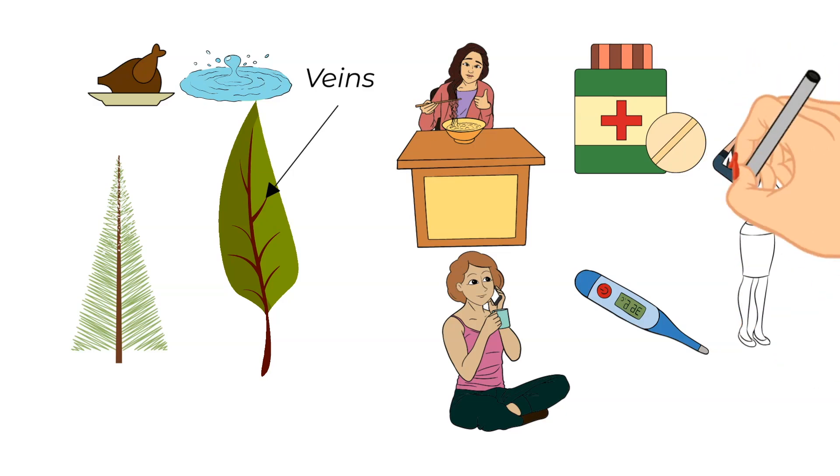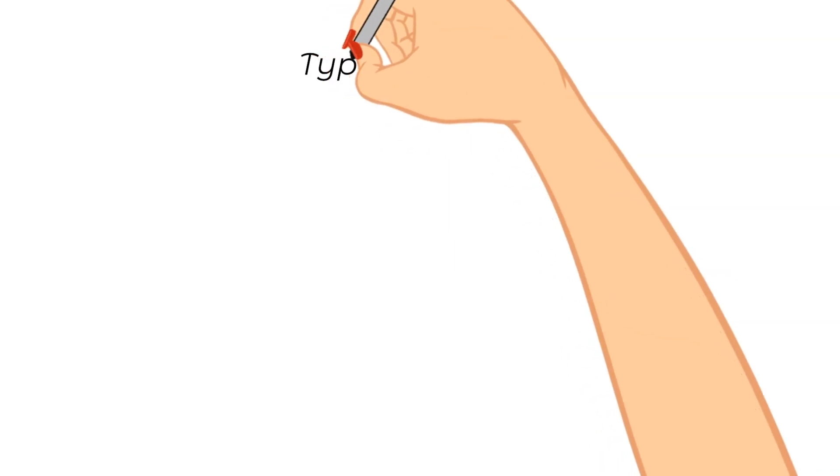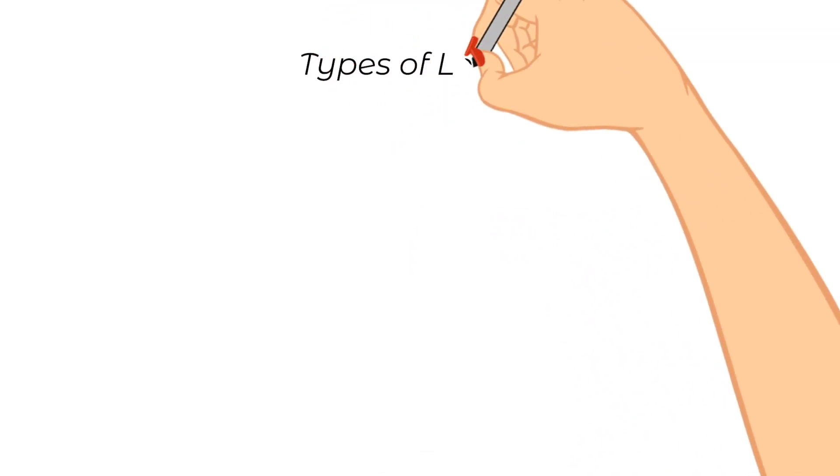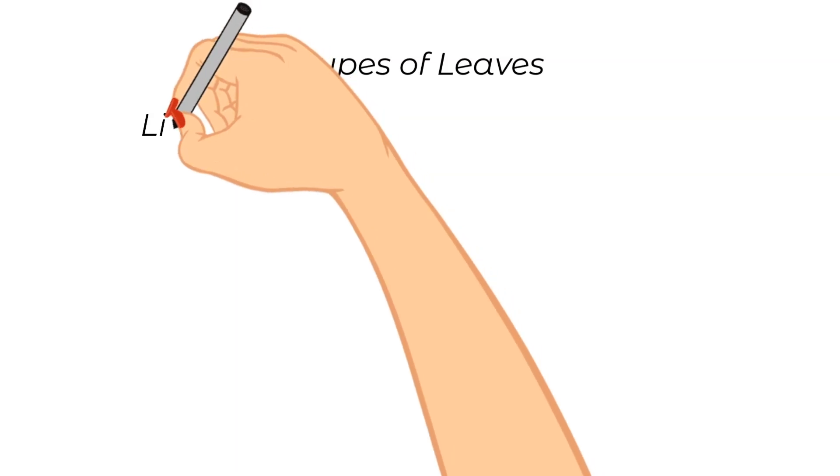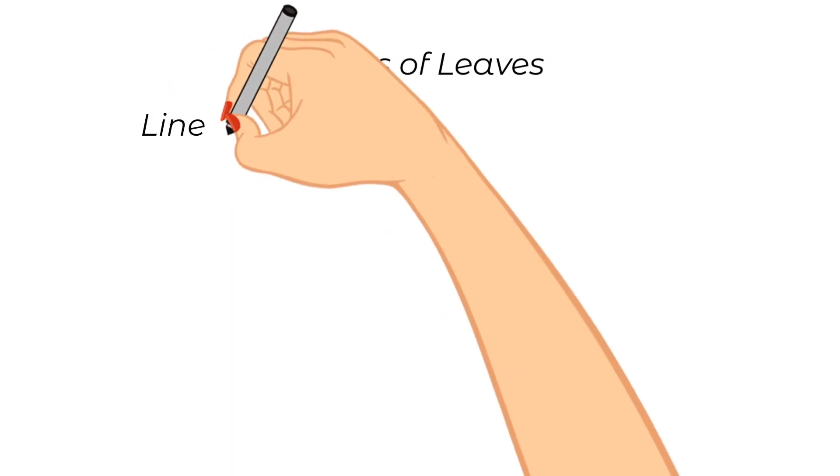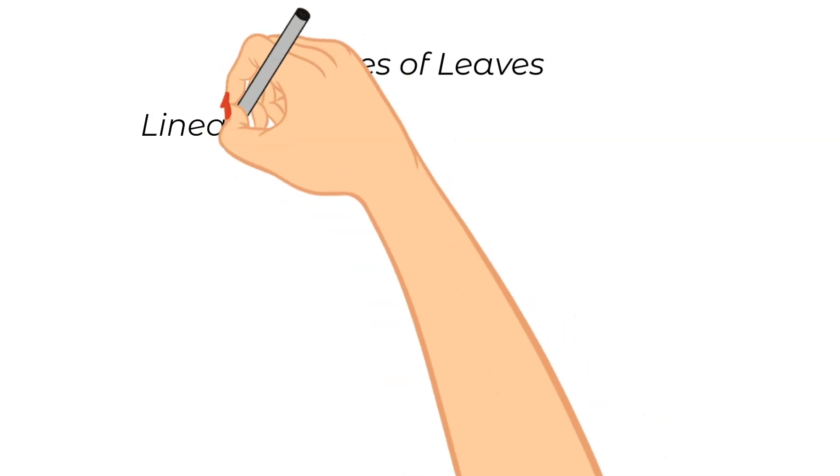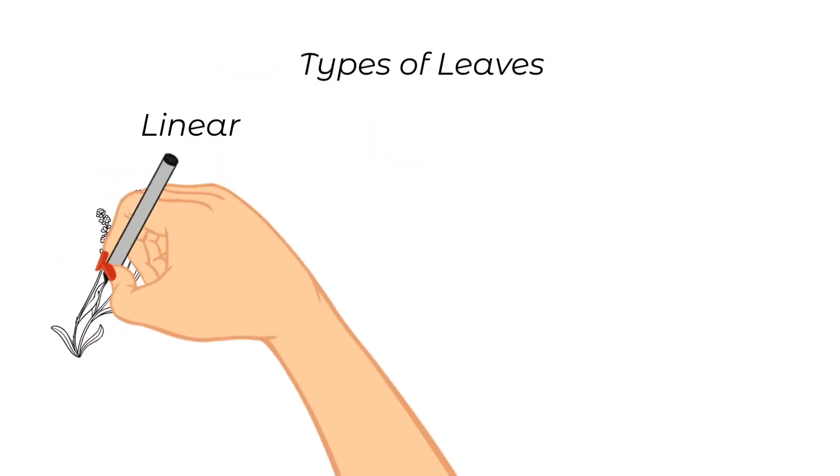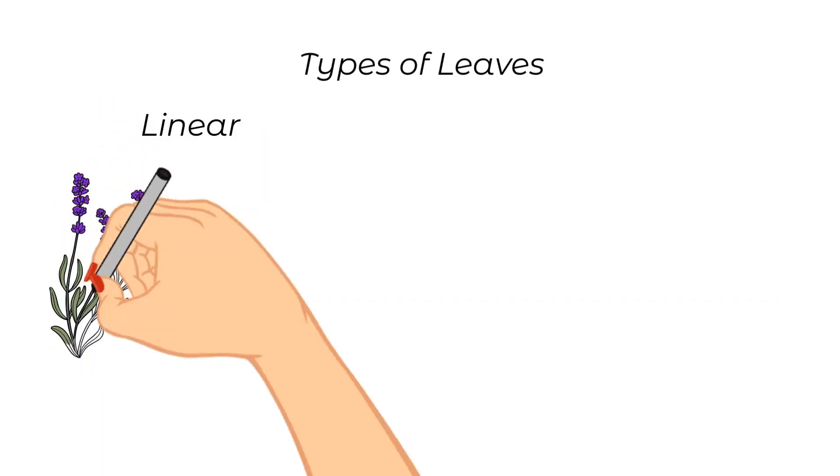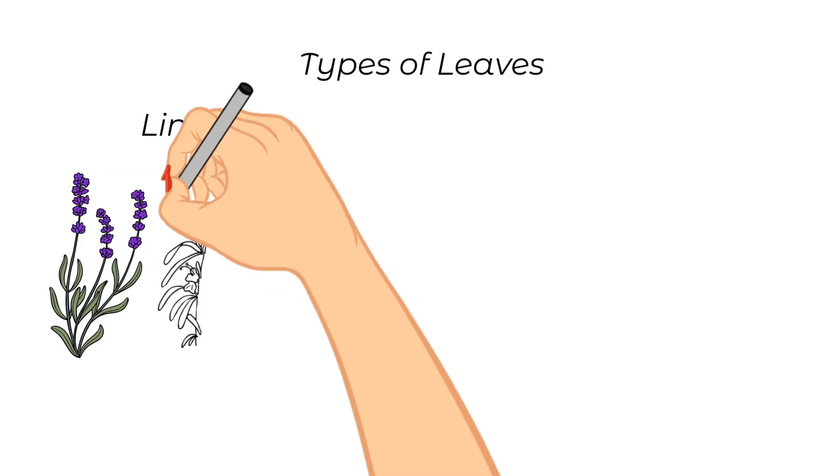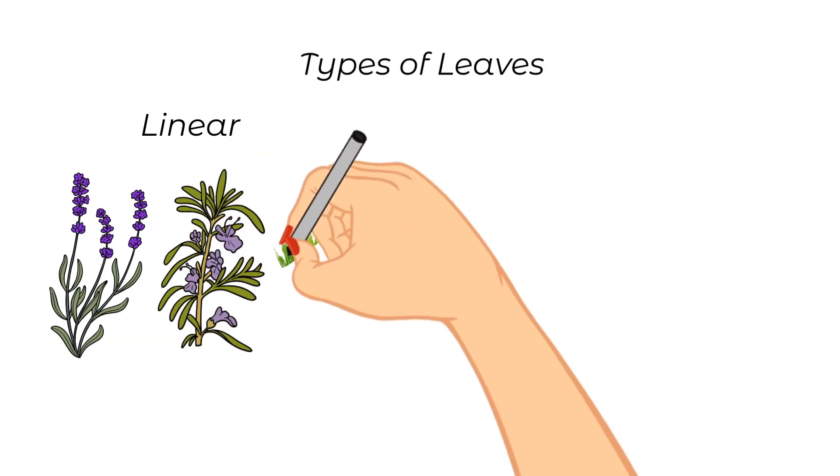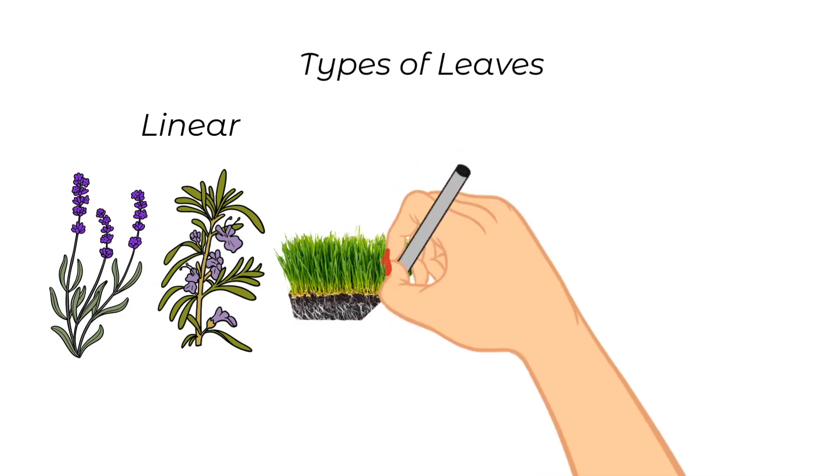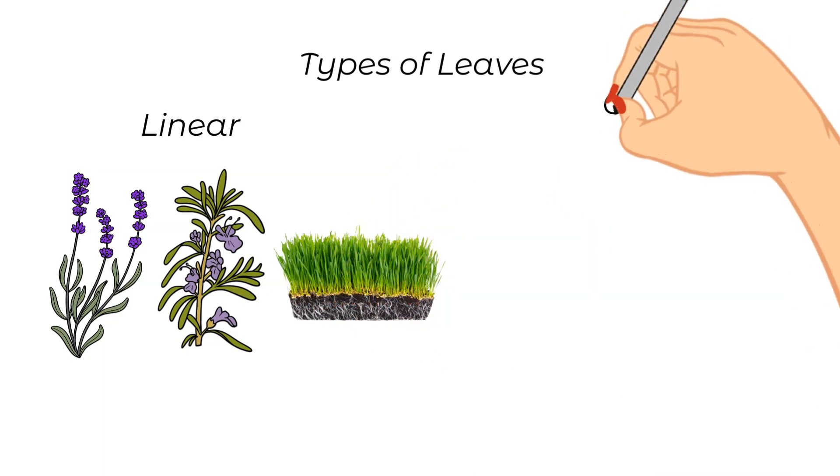So now that we have reviewed the purposes of leaves and some uses of leaves, let's dive into talking about the six shapes of leaves. First, there are linear leaves. What does a linear leaf look like? Well, it is typically long and narrow in shape and its sides are almost parallel with each other. A good rule to follow is that linear leaves are usually more than four times longer than they are wide. Some plants that have linear leaves include lavender and rosemary, as well as most grasses.